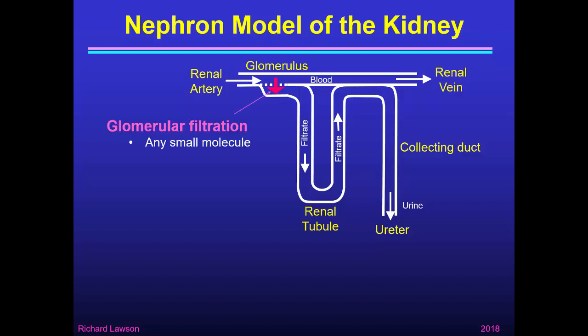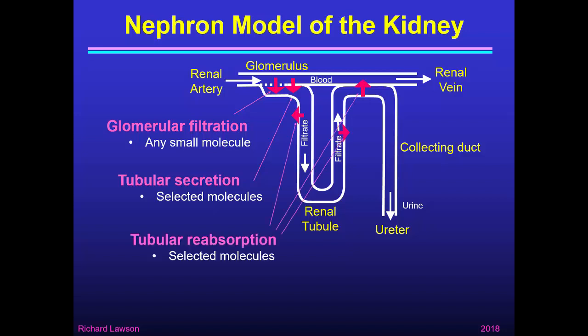Glomerular filtration takes place at the glomerulus — a passive process that will happen for any molecule that is small enough. Tubular secretion is an active process for selected molecules that may take additional molecules from the blood into the filtrate. Tubular reabsorption, which can take place in the loop of Henle and the distal renal tubule, can reabsorb selected molecules that the body wants to retain. Water reabsorption takes place in the descending limb of the loop of Henle, the distal tubule, and the collecting ducts, and this ultimately determines how much urine you produce.